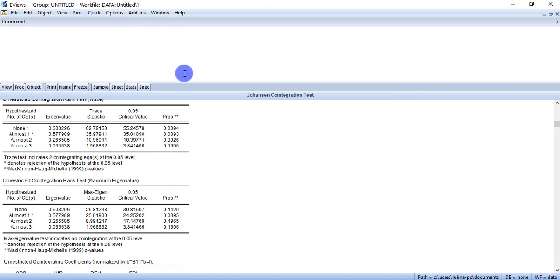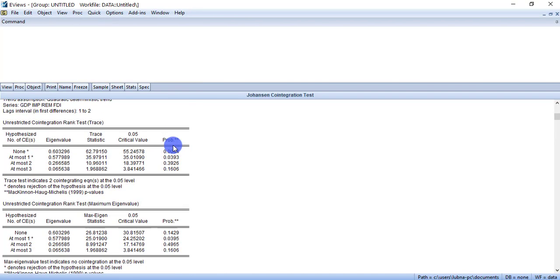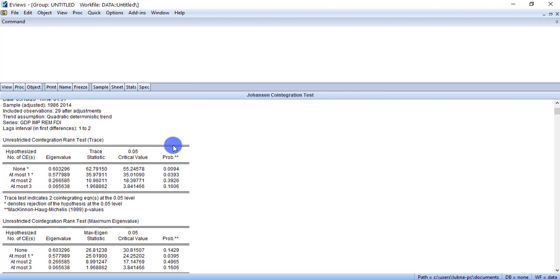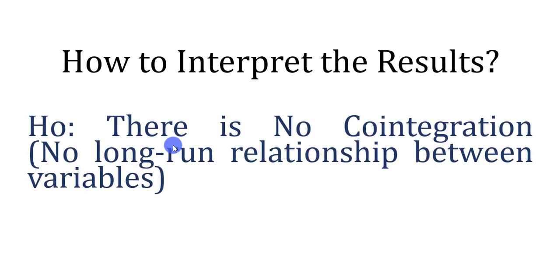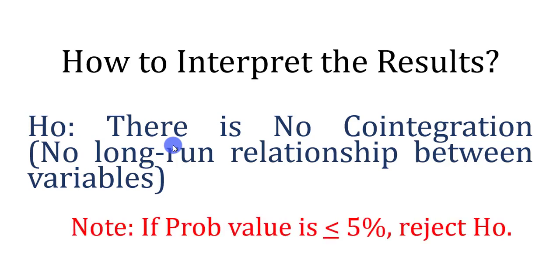Now press OK. This is the cointegration result. Before I report the result, let's see what the null hypothesis of the cointegration test is. For interpretation, we will use the null hypothesis, which states that there is no cointegration — meaning no long-run relationship between variables. The rule of thumb is that if the probability value is less than or equal to 5%, we reject the null hypothesis, and vice versa.